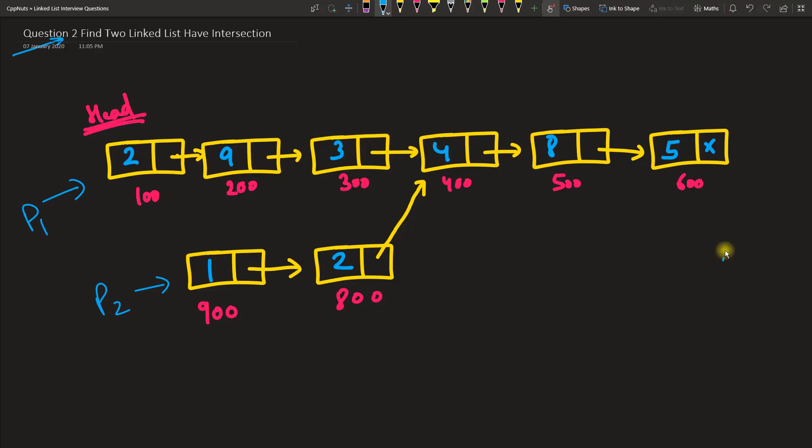The first thing that comes to mind is maybe I will have one flag with each and every node. When I was constructing this linked list and this linked list, initially I will have that flag set to zero everywhere. Now I will move my pointer one by one, like p1 will come to this guy and p2 will come to this guy.